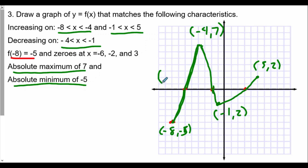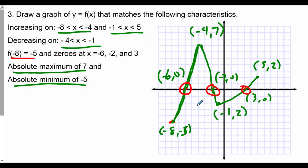Your graph can look quite different, but it has to have these requirements. We have our zeros at negative 6 comma 0, negative 2 comma 0, and 3 comma 0. The very important points to have are definitely the zeros and, of course, the absolute max and absolute min. That was question number 3. Let's continue on to question number 4.